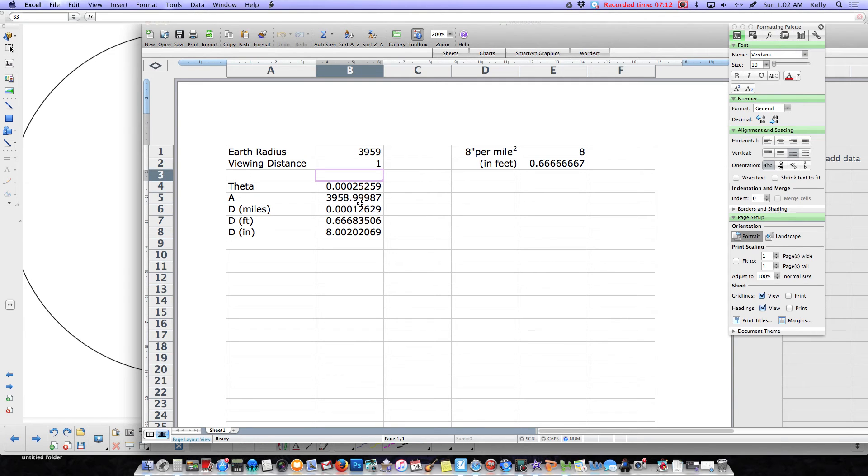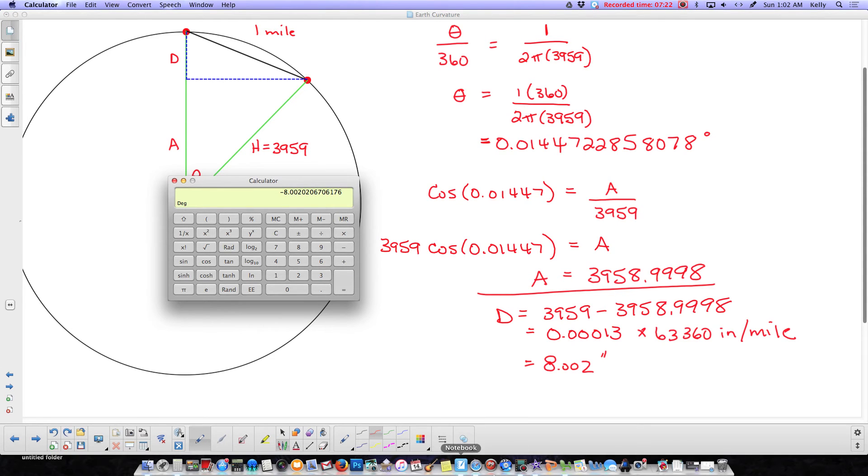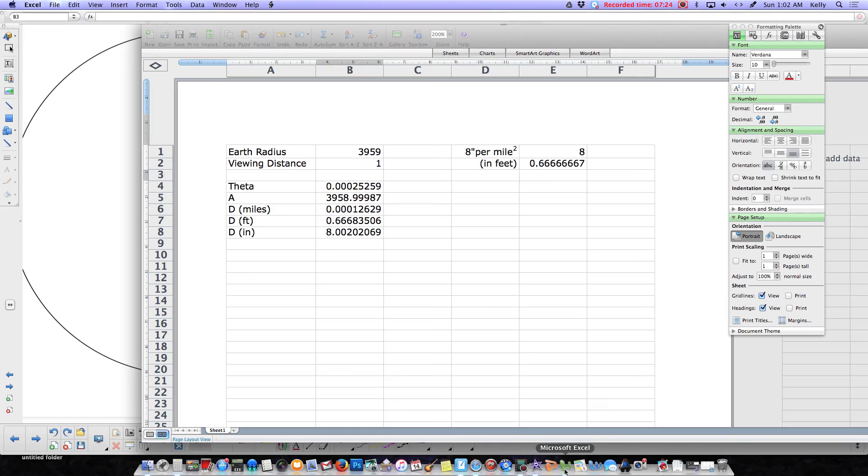If you take a look at A, 3958.99987, that's exactly what we got over here, although I didn't put the 7 on the end. And we got the 8.00202 that we got before.